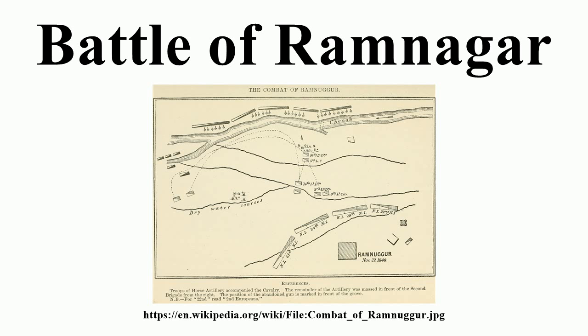Battle: By November, the British had at last assembled a large army on the frontier of the Punjab, under the commander-in-chief, General Sir Hugh Gough. Gough had been criticised for his unvarying frontal attacks during the First Anglo-Sikh War, which had led to heavy British casualties and some near disasters. In the early hours of 22 November, Gough ordered a force of cavalry and horse artillery, with a single infantry brigade, to move to the Chenab crossing near Ramnagar, apparently intending to capture the position by surprise.